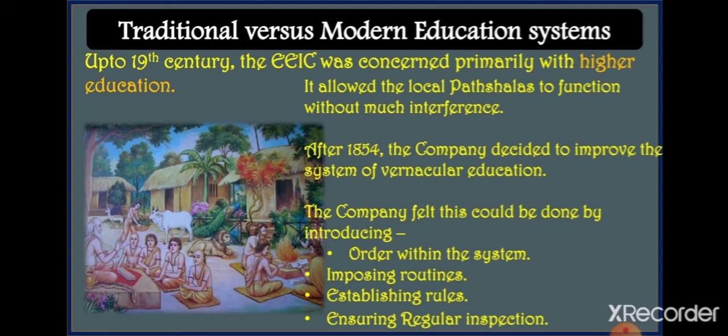Now let us move to the comparison between the traditional versus modern education system. I have already explained the structure of the traditional education system of India in the pre-colonial era. All of you know that in that system there were no schools, no registers, no roll call, no compulsory attendance, no buildings, no furniture for students — and one teacher would teach all subjects.